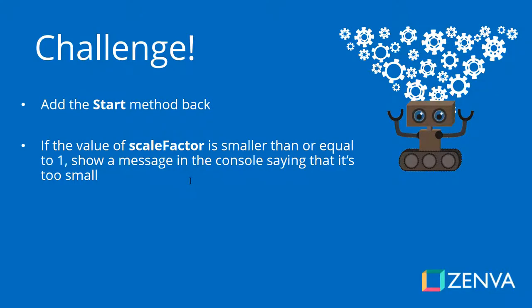Now we have a challenge. Go to your script and add the Start method back. Inside that method, create an if statement to check whether the value of scaleFactor is less than or equal to one. If that is the case, show a message in the console saying that the value is too small — because otherwise we're making the balloon smaller and smaller instead of bigger. Have a try, then I'll show you the solution.